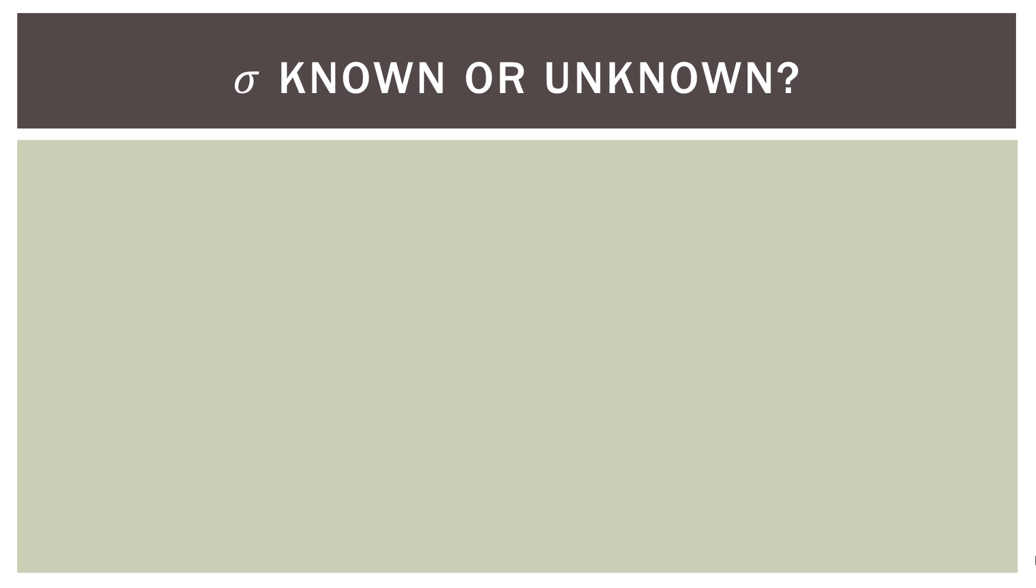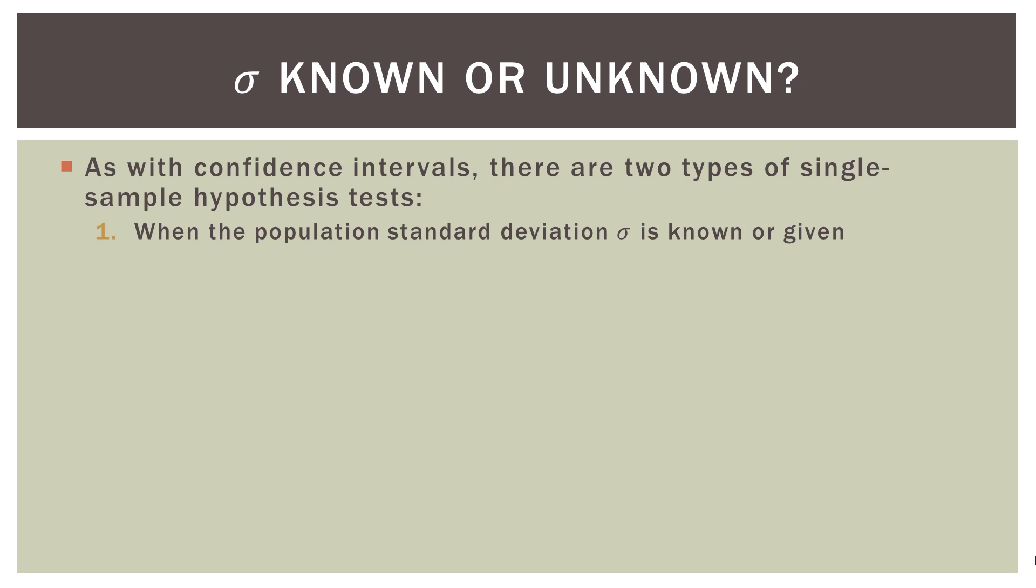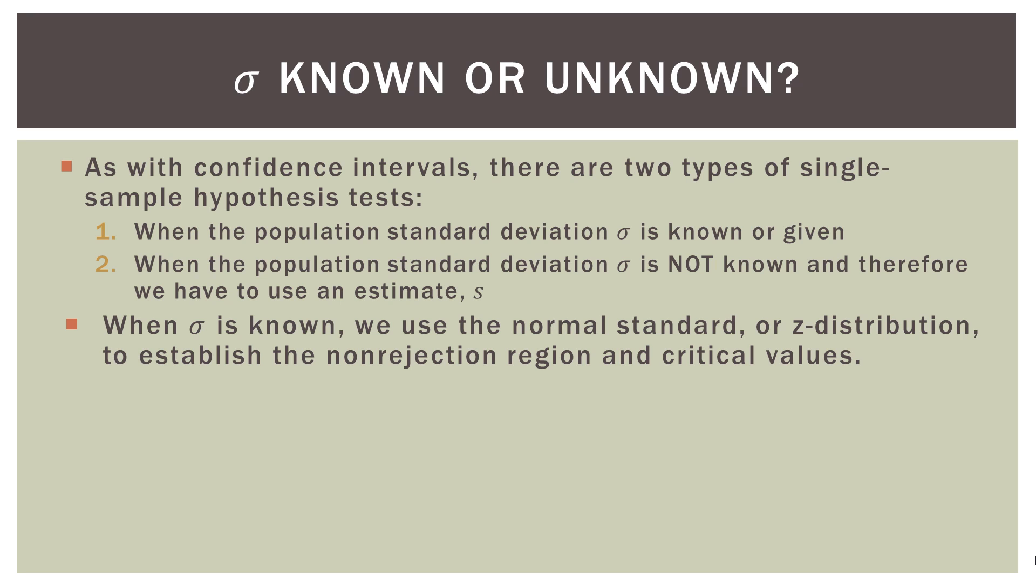Now as I said, there are really two types of these statistical tests: there are ones where we know sigma and ones where we don't. So as with confidence intervals, there are two types of single sample hypothesis tests. When the population standard deviation sigma is known or it's given to us, and when the population standard deviation sigma is not known, and therefore we have to estimate it using S, the sample standard deviation. Now when sigma is known or given to us, we use the normal standard or the Z distribution to establish the non-rejection region and the critical values in our sampling distribution. So again, we talked about that at great length when we looked at type one and type two error rates. So if you're still unsure what this concept is, go back and look at those videos. But when we know sigma, we're going to use the normal standard or the Z distribution to establish these regions.